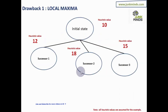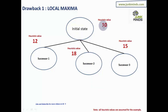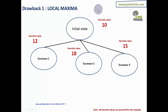The first is local maxima. In both algorithms, whenever comparing states I wanted at least one successor to have a value better than the current state. But what if the current state has value 10 and all three successors have worse values? When all successors are worse than the current state, we call it local maxima — and hill climbing has no strategy to handle this.